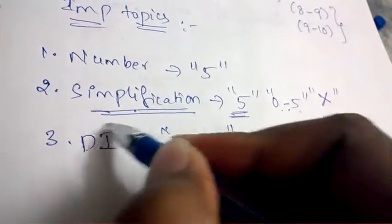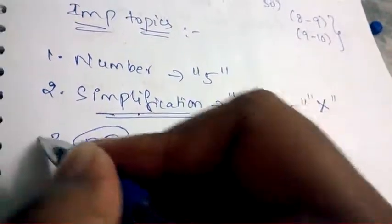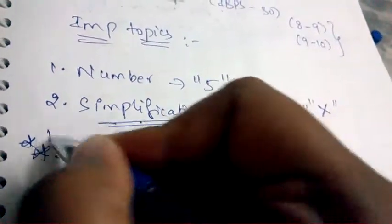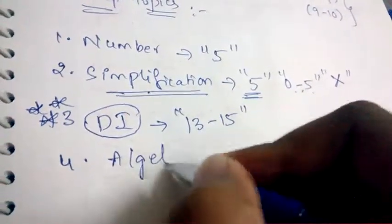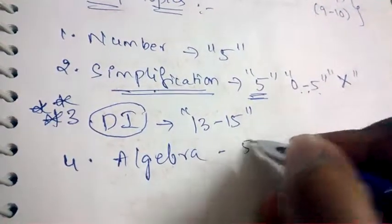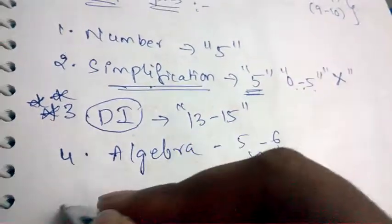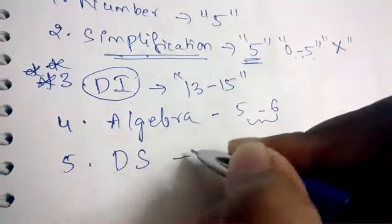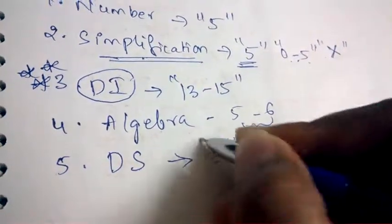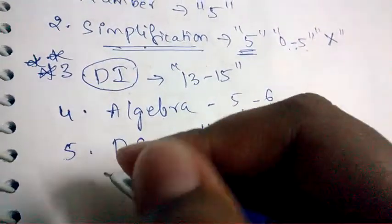Next is Algebra. From Algebra, they'll be asking 5 to 6 questions. And next is Data Sufficiency. From Data Sufficiency, they'll be asking 5 questions.